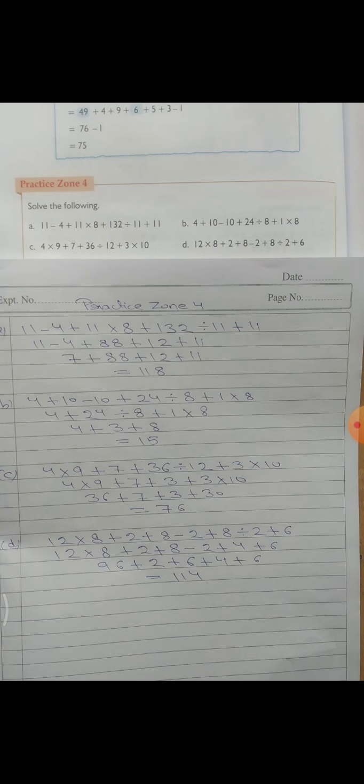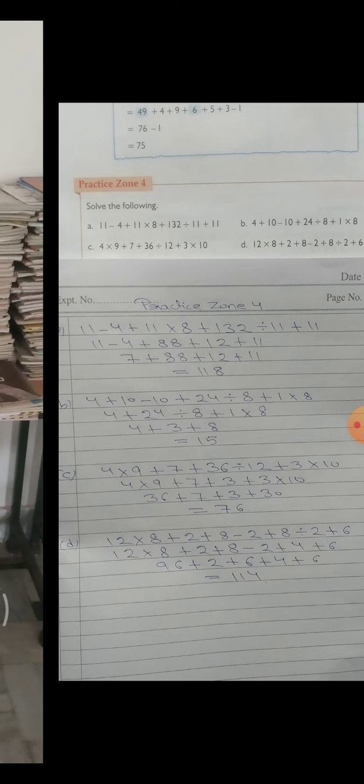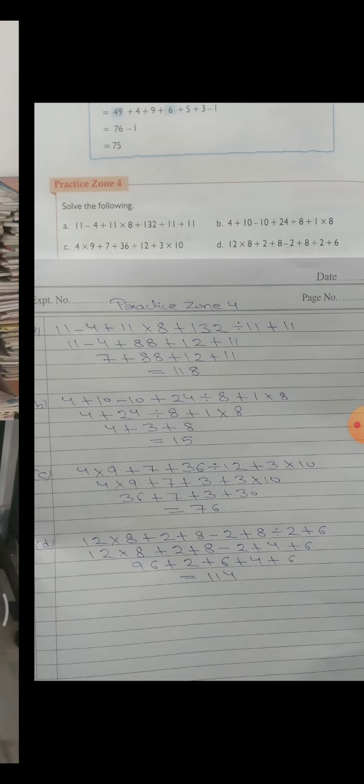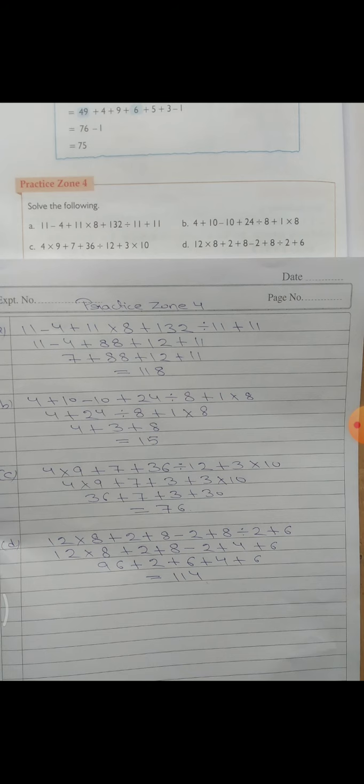अब 24 divided by 8 करेंगे, तो कितना होगा? 8 × 3 = 24, तो 3 जाएगा. 4 plus 3 plus 8, तीनों करेंगे तो 15 निकला answer. Thanks for watching, thank you.